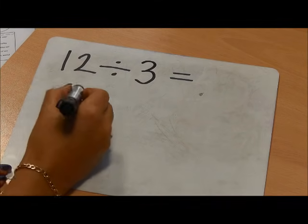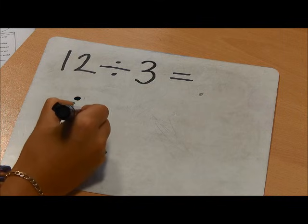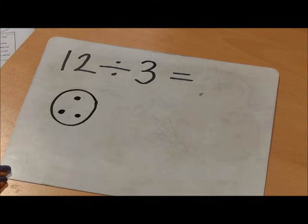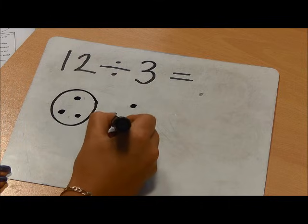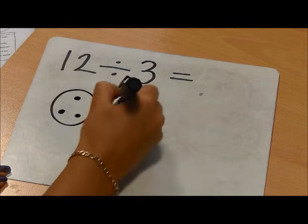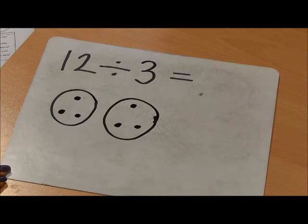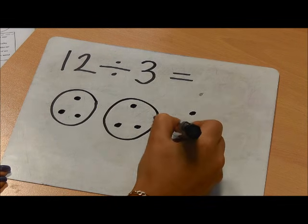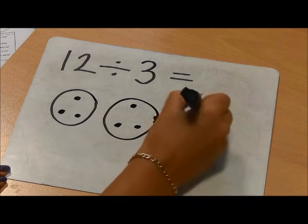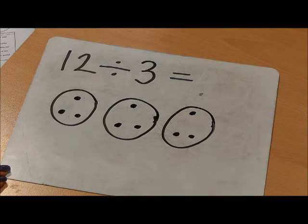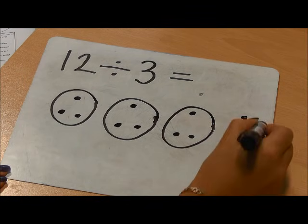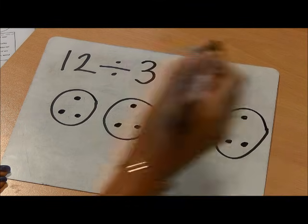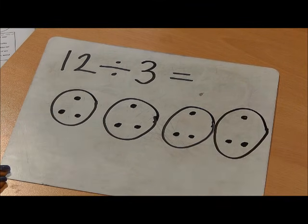So one, two, three. Now I'm going to do another group of three: four, five, six. And another group of three: seven, eight, nine. And another group of three: ten, eleven, twelve. So my twelve to start off with.